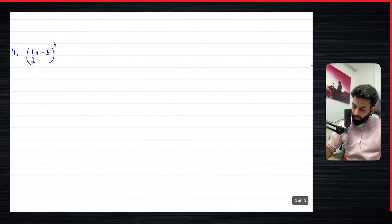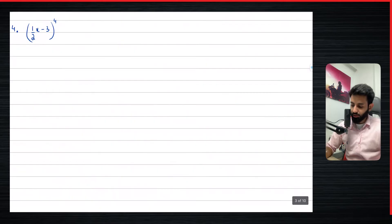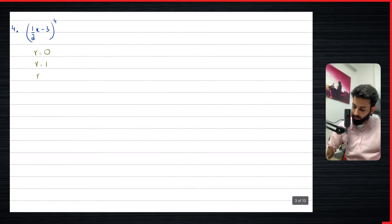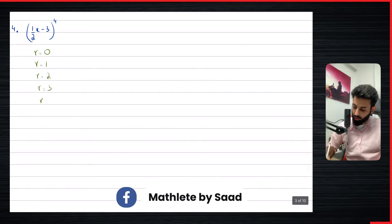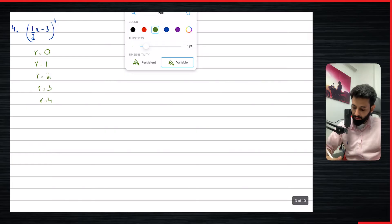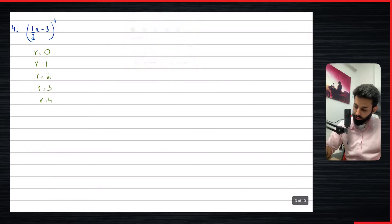Now we have another question — example number four — and here we have to expand half x minus three to the power of four. We'll start by r equals zero, then r equals one, then two, then three, then four. This time we have a fraction, so just be slightly careful about that.